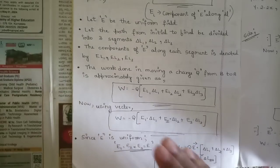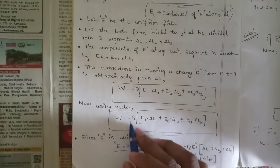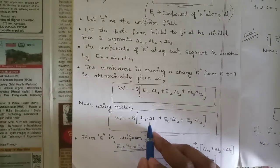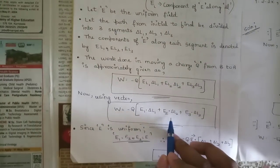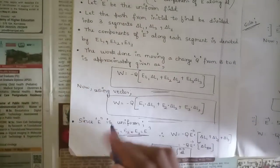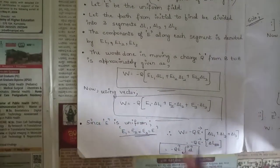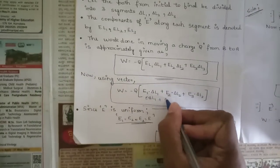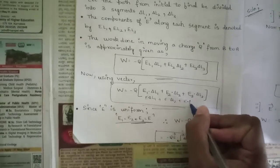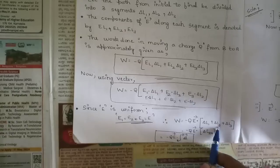Using vector dot products: W = −q(E1·Δl1 + E2·Δl2 + E3·Δl3). Since the electric field is uniform, E1 = E2 = E3 = E, so E can be taken outside: W = −q · E · (Δl1 + Δl2 + Δl3). The sum Δl1 + Δl2 + Δl3 equals the total displacement Δl from B to A.